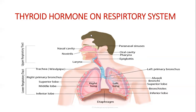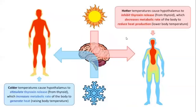How does thyroid hormone secretion change in summer and winter? When the temperature is too hot, the hypothalamus inhibits thyroxine release, so metabolic rate and heat production are reduced. Whereas in winter, the hypothalamus stimulates thyroxine release, which increases metabolic rate and generates heat.